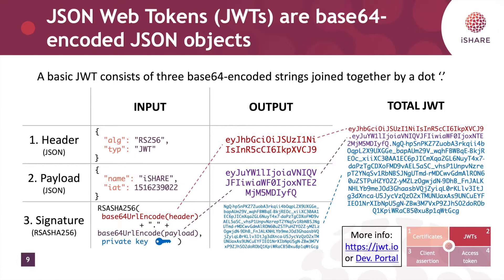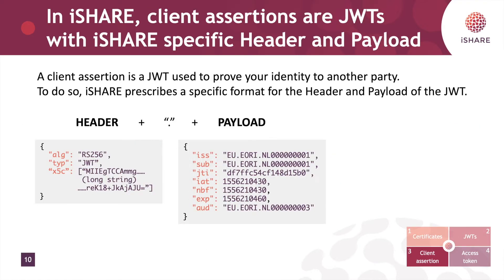You can send this JSON web token to others and they can decode the first and second part to see the information you want to send them. They can verify that you were the one that sent this message by verifying the signature with the public part of your certificate. So now that we understand certificates and JSON web tokens we can discuss the client assertion. A client assertion is nothing more than a very specific JSON web token used to prove your identity to another party in iShare.